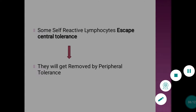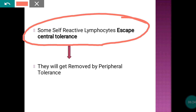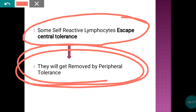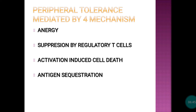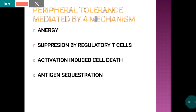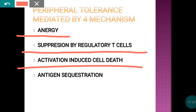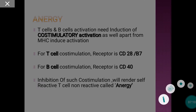If self-reactive lymphocytes escape central tolerance, they will be removed by peripheral tolerance. There are four mechanisms of peripheral immune tolerance: first, anergy; second, suppression by regulatory T cells; third, activation-induced cell death; and fourth, antigen sequestration.